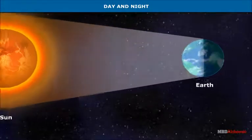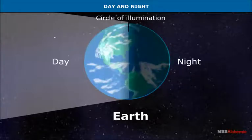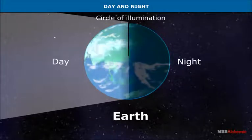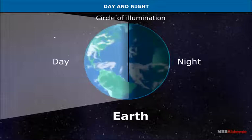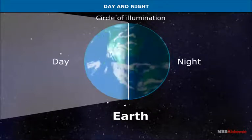The circle which divides the Earth into its lit and unlit halves is known as the circle of illumination. As the area in the zone of darkness comes nearer to the zone of illumination, there is diffused light. This early period of the day is known as dawn.